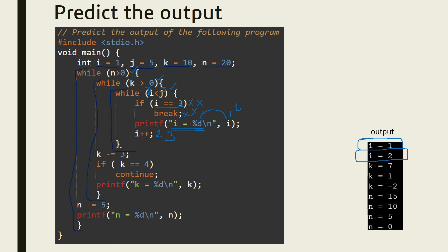i is incremented to 3 and it again checks 3 less than 5, which is true. It comes inside and checks if 3 equals 3 — i is now equal to 3, so this condition is true and the break statement is executed. The break statement exits from the currently executing while loop, so it comes out of that inner while loop to the next statement.